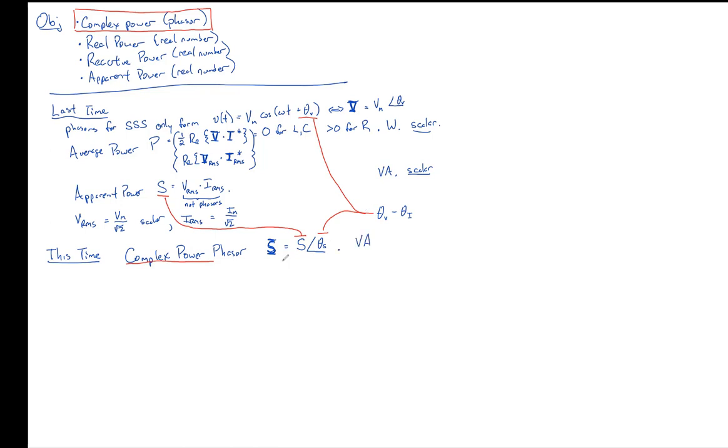Our unit that we're going to measure it in is the same as apparent power. It's going to be volt amps. What makes it different than volt amps is that it is a phasor. Now, we can write this in one of several ways.